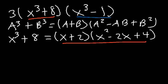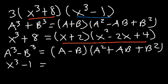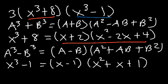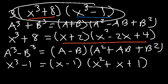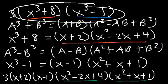For x cubed minus 1, the difference of cubes formula is a cubed minus b cubed equals a minus b times a squared plus ab plus b squared. Here a is x and b is 1, so a squared is x squared, ab is x, and b squared is 1. The final answer is 3 times x plus 2 times x minus 1 times x squared minus 2x plus 4 times x squared plus x plus 1. We can't factor these two trinomials any further.